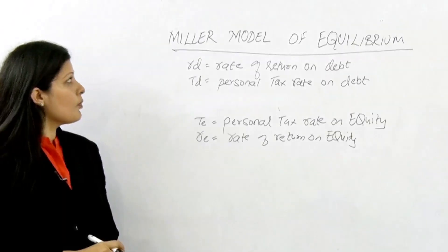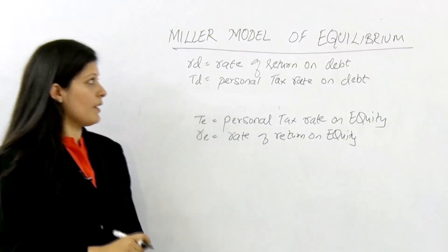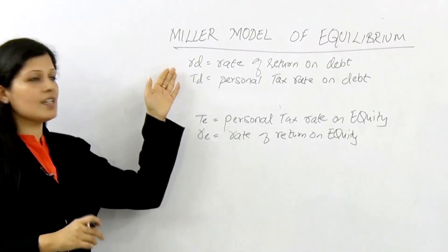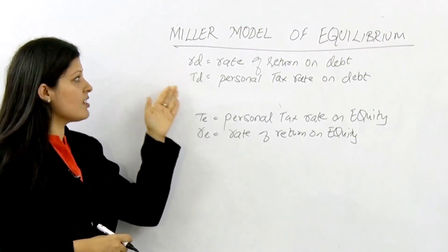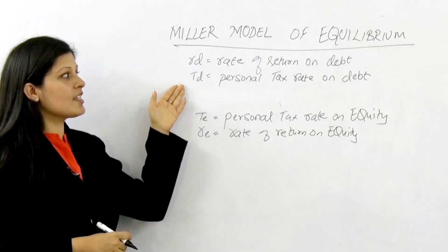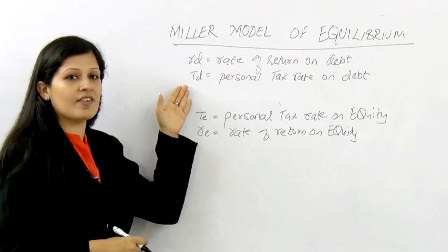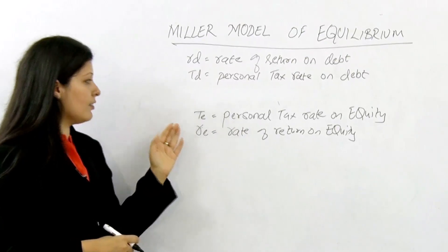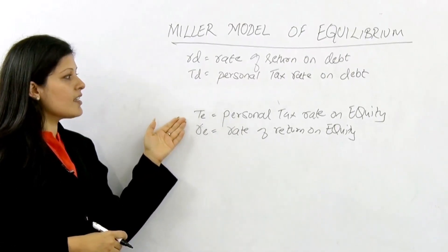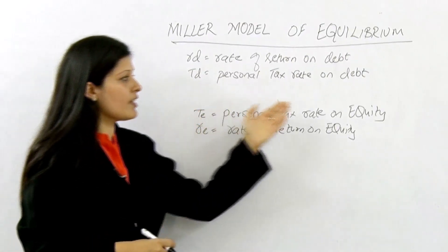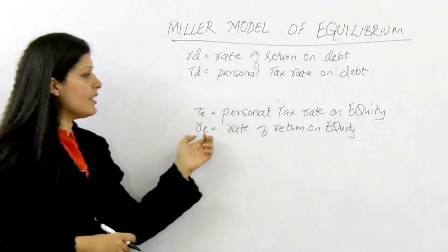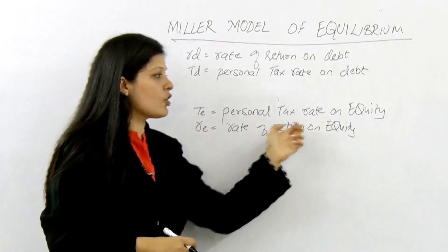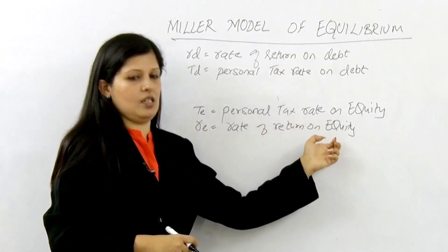Now we will talk about Miller's Model of Equilibrium. RD is the rate of return on debt. TD is the personal tax rate on debt. TE is the personal tax rate on equity. RE is the rate of return on equity.